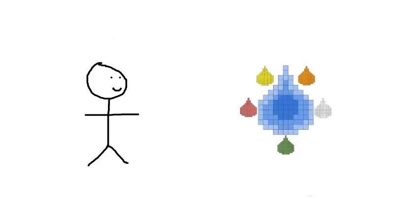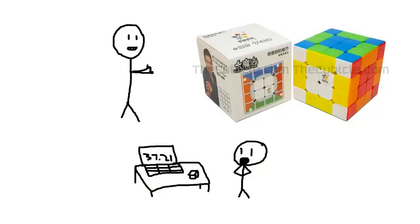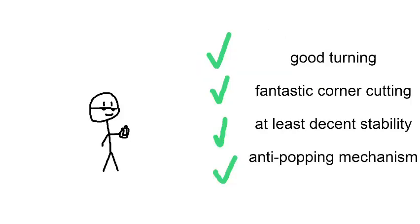Next question comes from Cubing in the Rain, and he asks, what is your favorite cube of all time? What do you look for in a cube? Why is cubing so fun for you? Have you ever cubed in the rain? Get it? Well, my favorite cube of all time is the YLM 4x4 M, mainly because it dropped my 4x4 times a lot. Now, what I look for in a cube is good turning, fantastic corner cutting, at least decent stability, and an anti-popping mechanism.